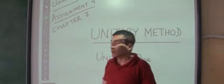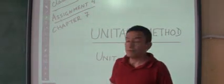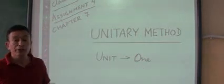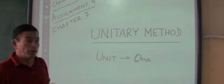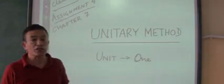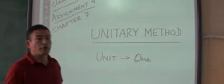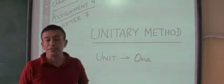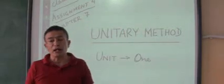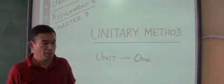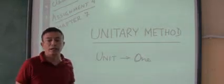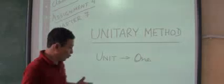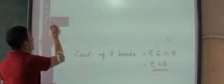Okay boys of class 7, this is with reference to your assignment number 4, chapter number 7, unitary method. The very word 'unit' stands for one. So what we are trying to find out is when something like the cost of many items is given and we are finding out the cost of one. These are sums that you have actually done in your previous classes, class 5 and class 6.